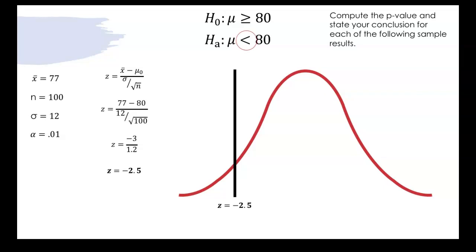So once again it's a left tailed test so we need the area to the left of the negative 2.5 z-score that area will be 0.0062 and again that area is your p-value.